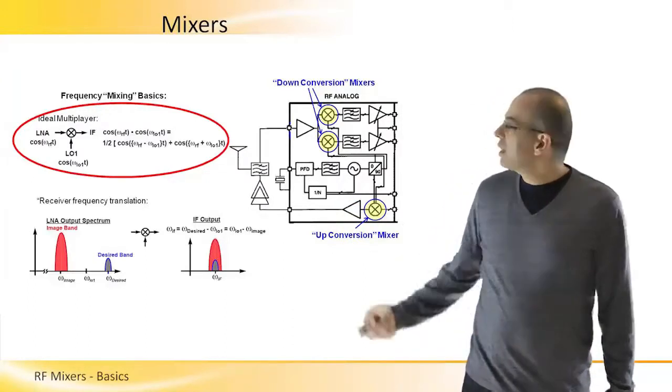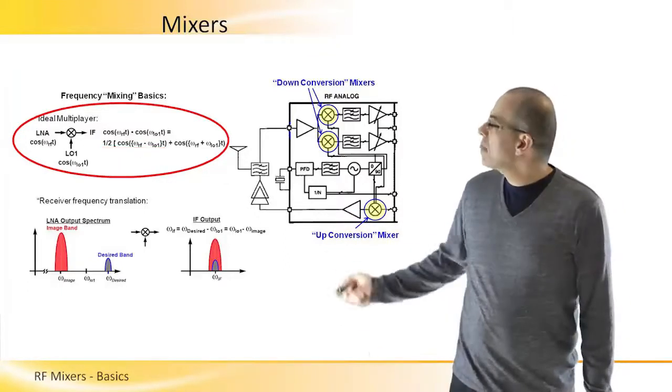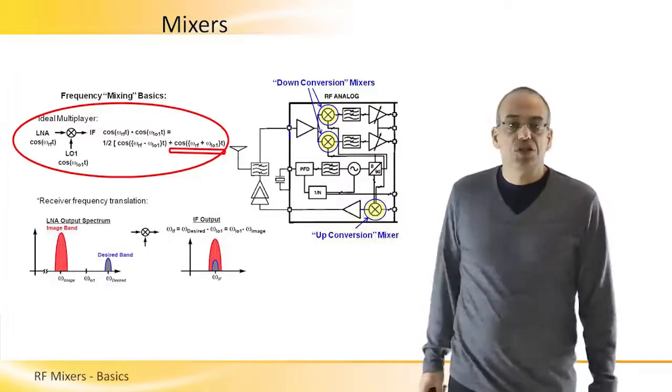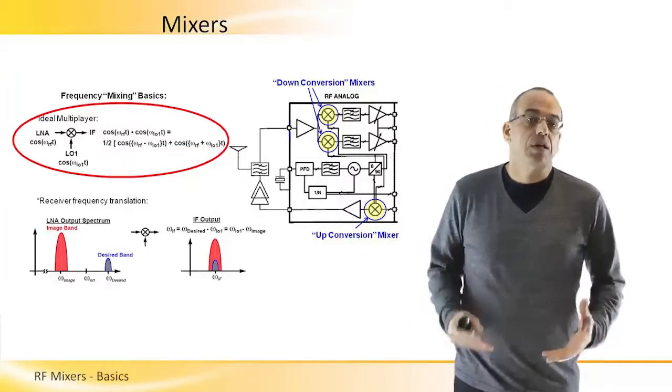we will get two new frequencies. One will be the difference of these frequencies, and the other one will be the addition of these frequencies. And this is how we do up and down converting.